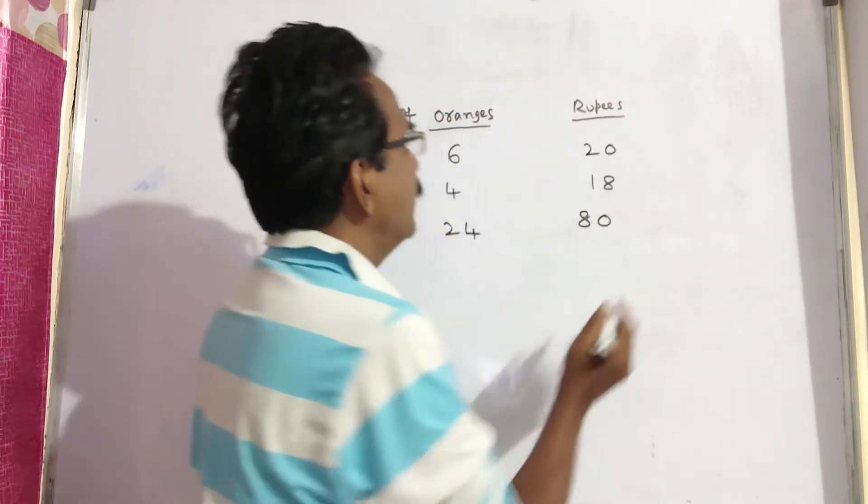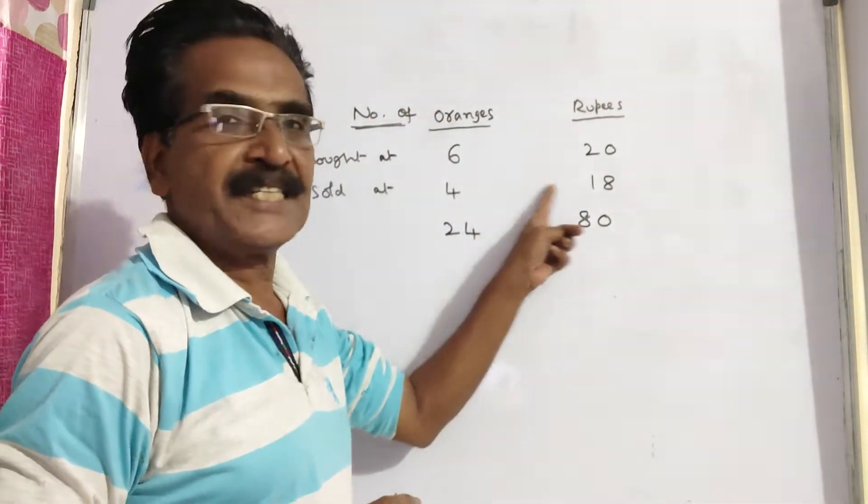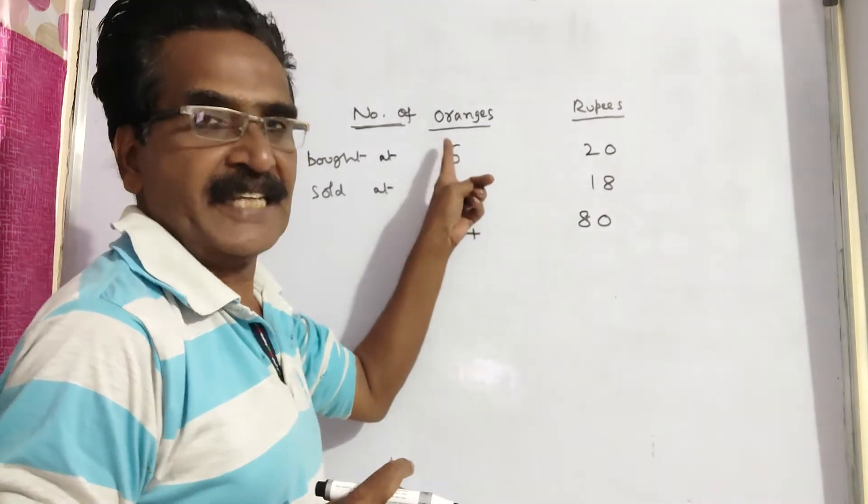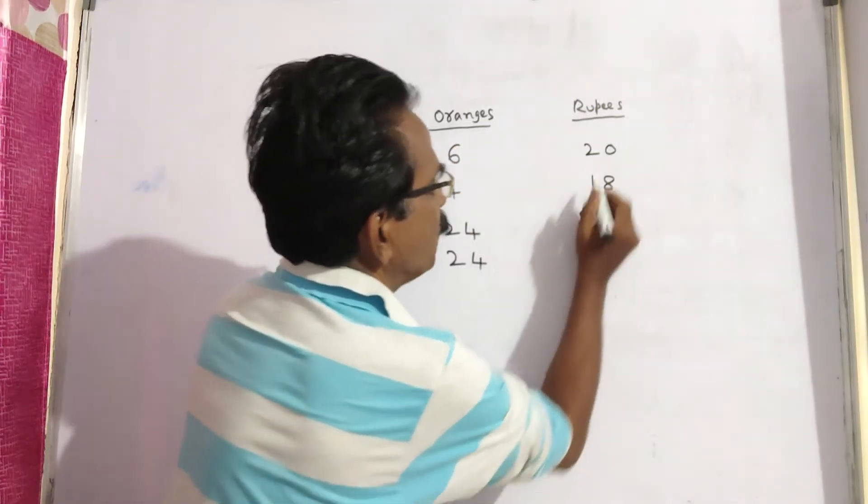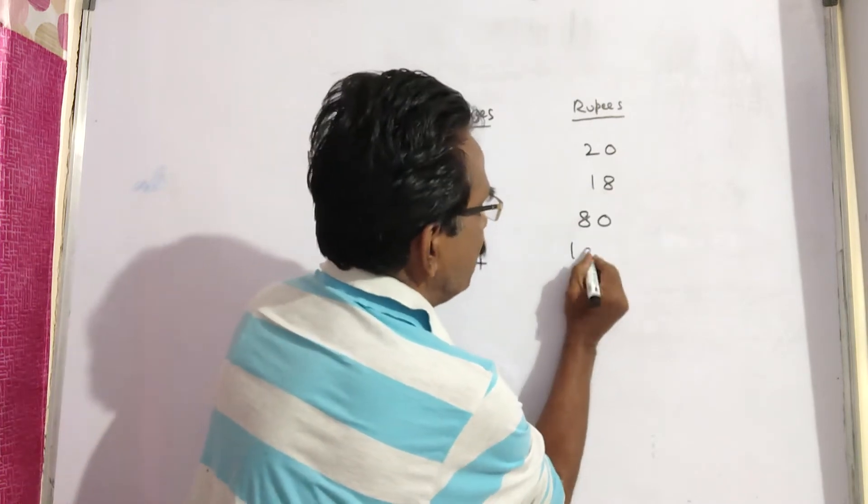And I am multiplying the second statement with 6. Six 4s, 24 oranges are sold for Rs 6 times 18, 108.